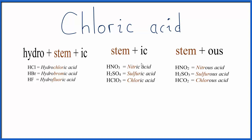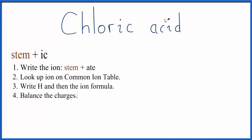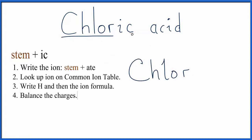We use a set of rules to write the formula for this acid. First, we'll write down the stem for the acid name. For chloric acid, that's C-H-L-O-R. Then we'll take the 'IC' ending and replace it with 'ATE,' which gives us the chlorate ion, and we can look that up on a common ion table.